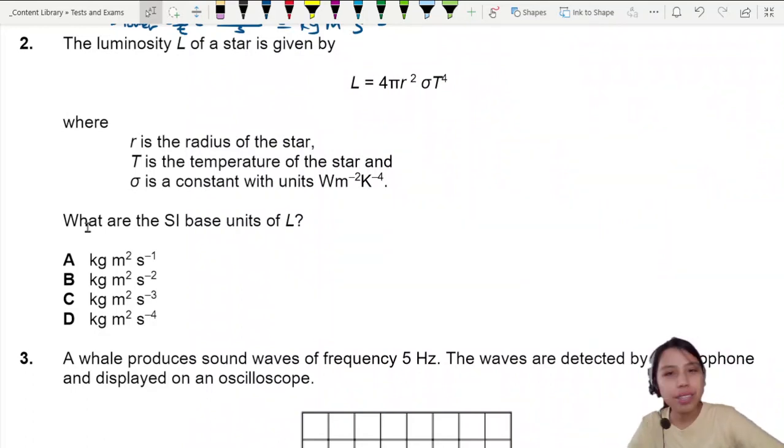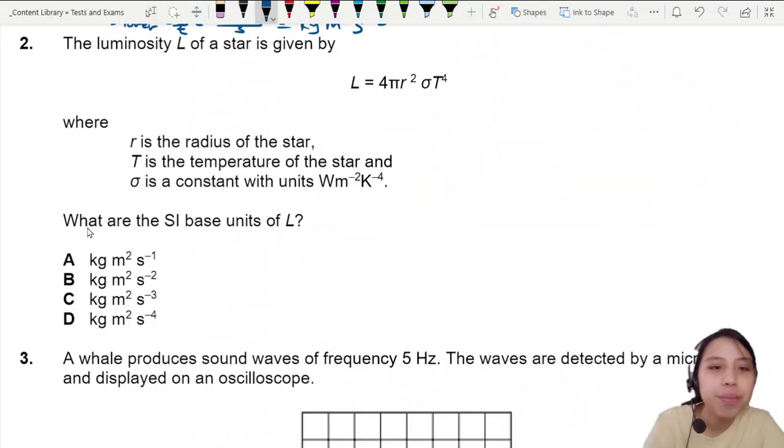The luminosity of a star is given by this fancy looking equation. R is the radius of the star, this is probably in meters.